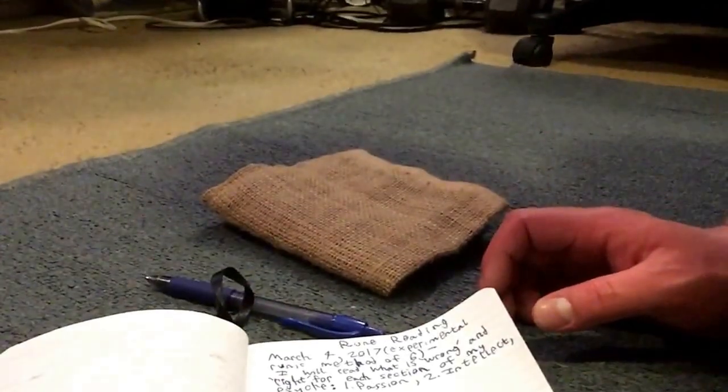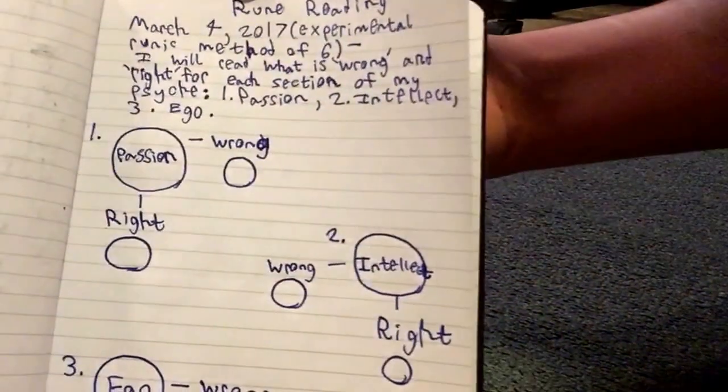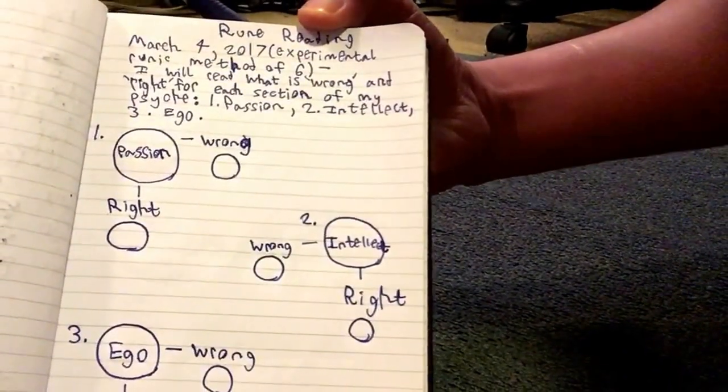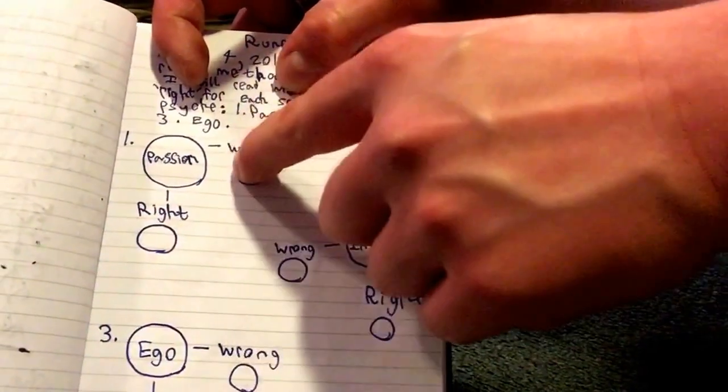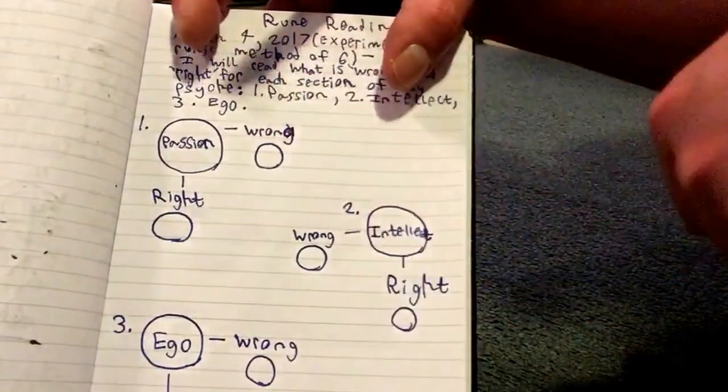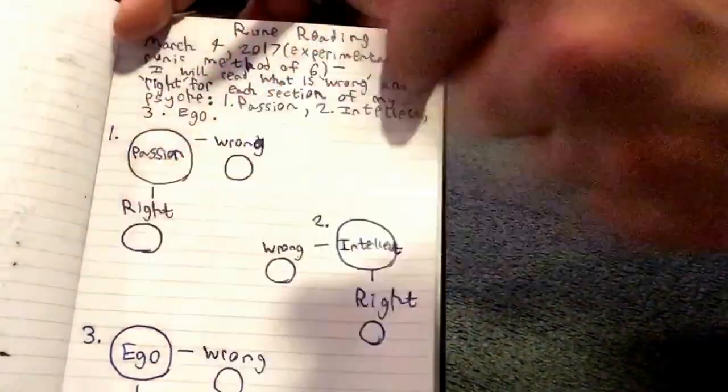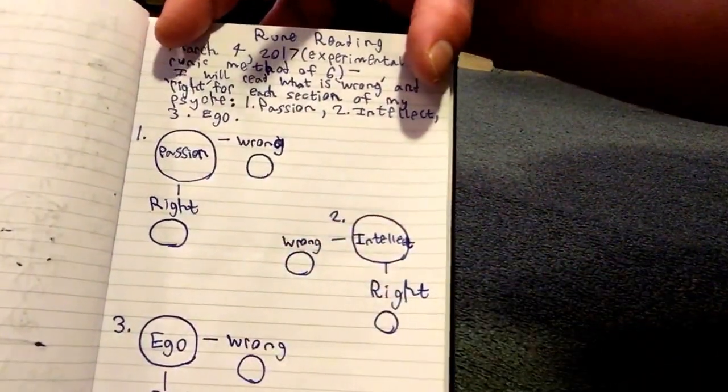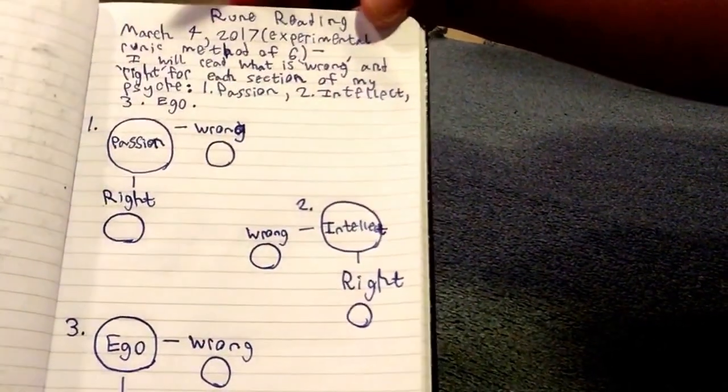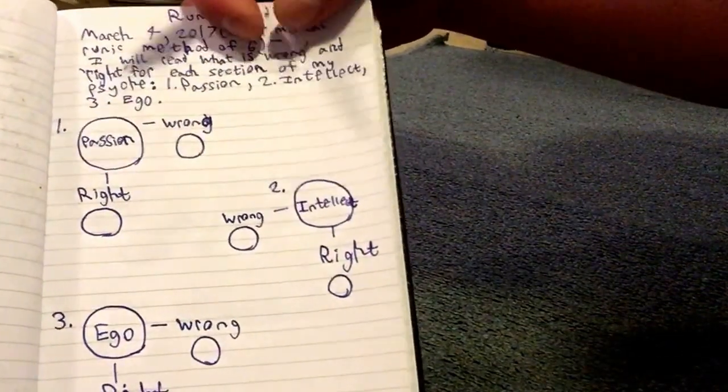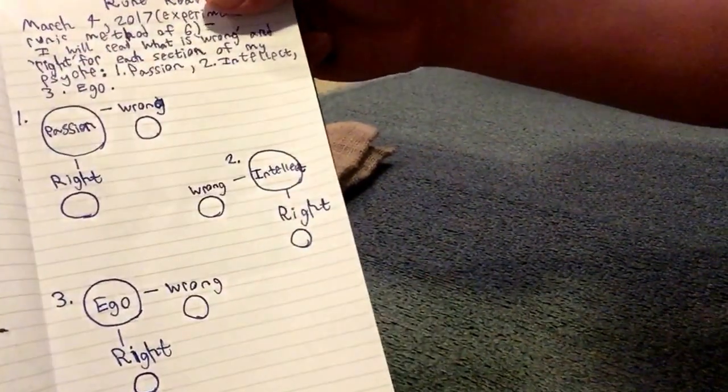So let's get started. I'll show you kind of how I have this laid out for now. I might change it in the future, but this layout that I have here I think is going to work very well. Basically, I briefly describe up here what I'm doing. And for passion I'm going to draw one rune that's wrong, one rune that's right. This will give me a feeling of what is right and wrong with my passion. And I'm going to do the same for intellect and ego. I have high hopes for this because I've done something similar to this before with tarot cards and it's turned out well.